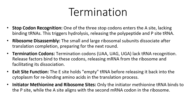The termination codons UAA, UAG, and UGA lack transfer RNA recognition. Release factors bind to these codons, releasing mRNA from the ribosome and completing the dissociation. The E site (exit site) holds empty transfer RNA before releasing it back into the cytoplasm for rebinding amino acids in the next translation process.